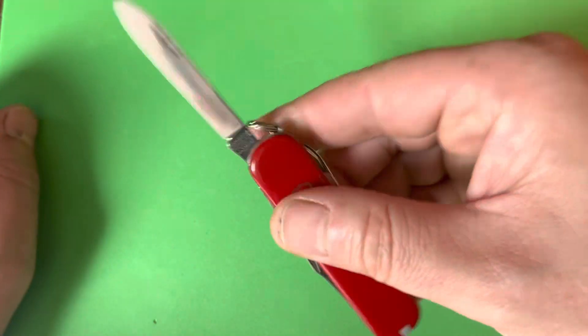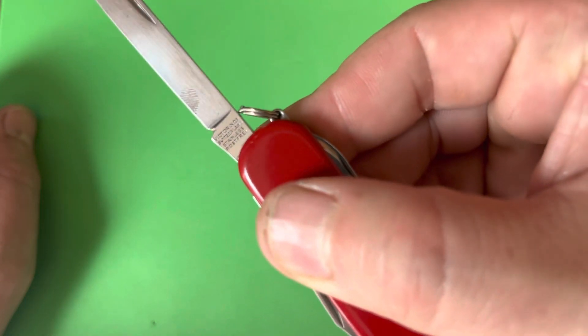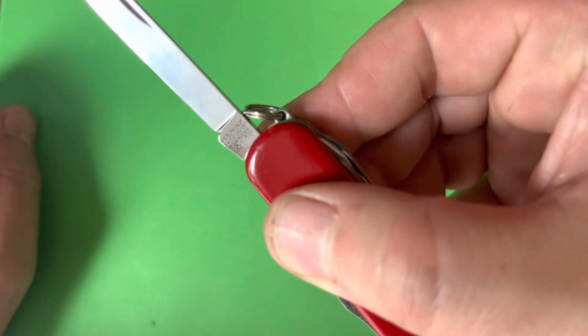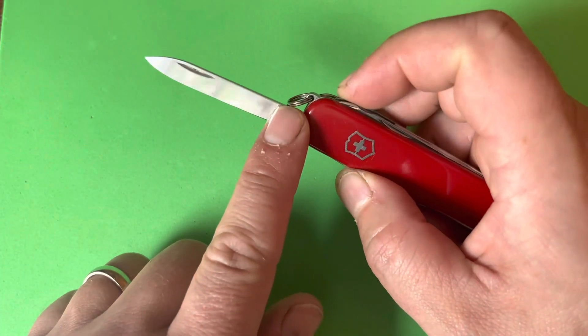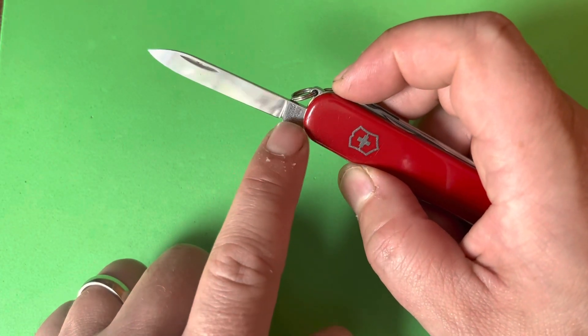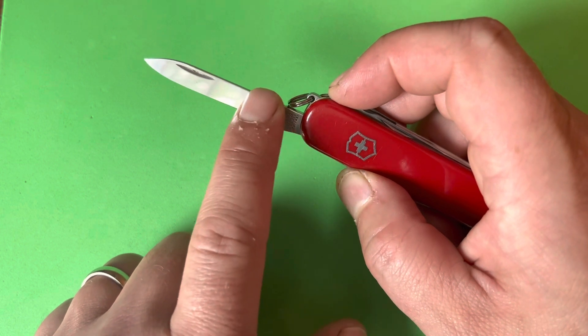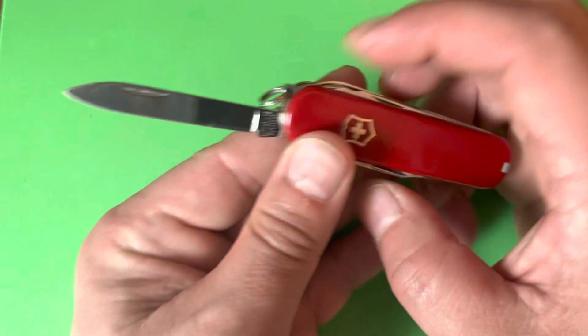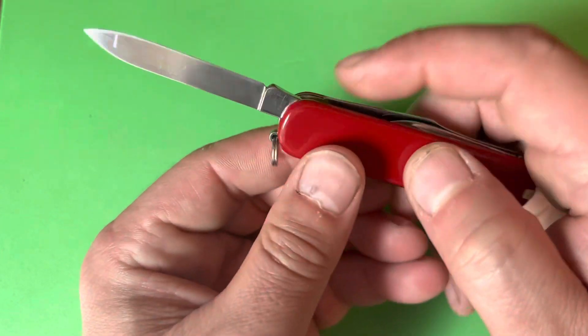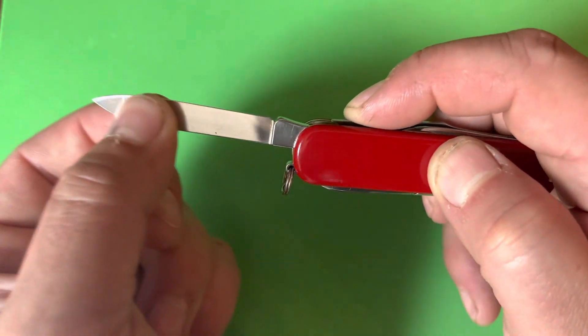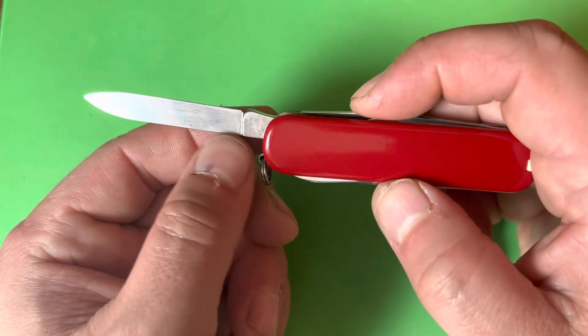It's that classic Victorinox spear point or drop point, however you want to refer to it. There is the tang stamp - sorry, there's some fingerprints on there. This blade had rust or rust residue all over the tang stamp and over here. I was able to polish it up and clean it actually quite nicely, so it came out really nice. You can see some scratches on it because this is a vintage blade.